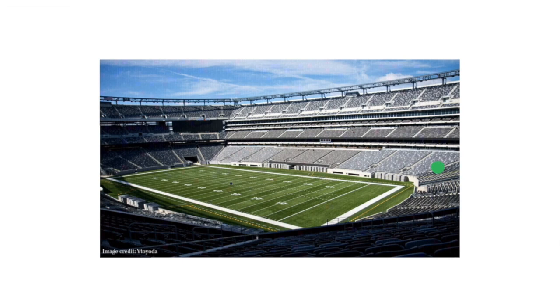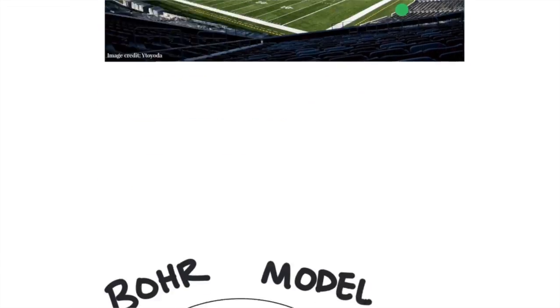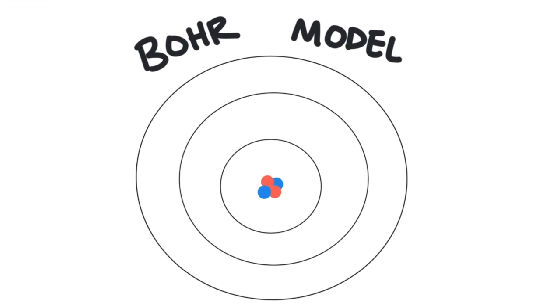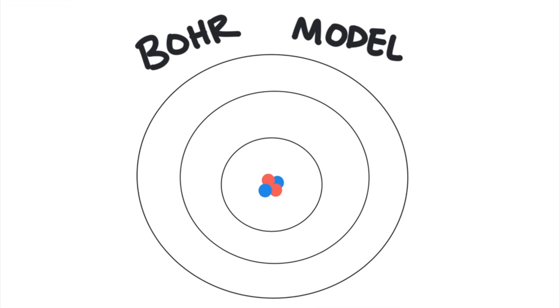And what about the electrons? They would be flying around the outside of the atom, somewhere up in the seats. There are a variety of models that we use to describe where the electrons are. The simplest model is called the Bohr model. The Bohr model puts the electrons into energy levels that look like the orbits of planets in a solar system.